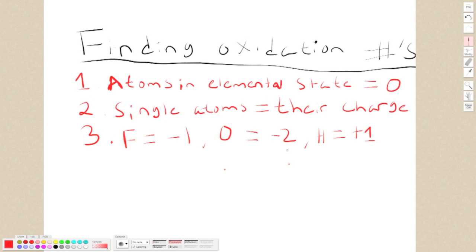Here are the three rules in finding an oxidation number. First, atoms in elemental state always have the oxidation number of zero. Single atoms are equal to their charge. And rule three is these are just some exceptions to the rule: fluorine always has the charge of negative one, oxygen always has a charge of negative two, and hydrogen always has a charge of positive one.